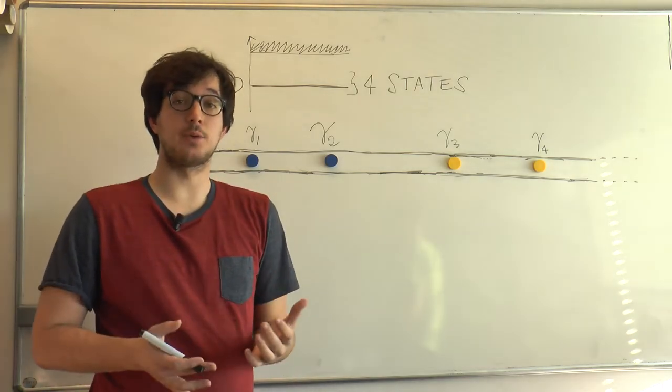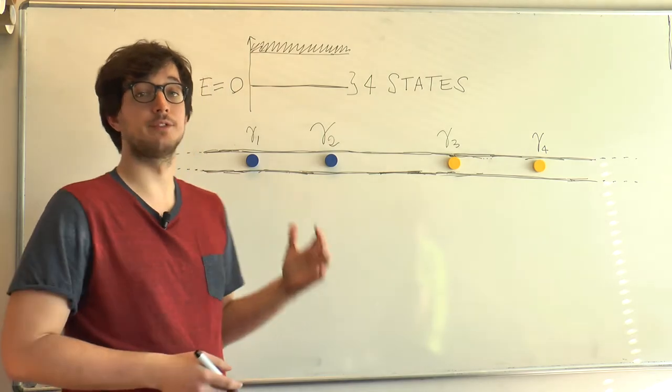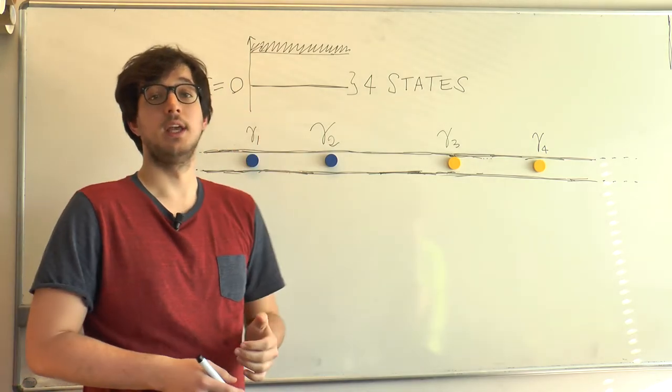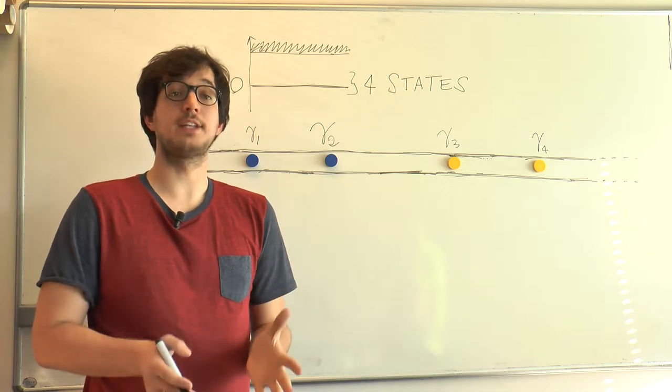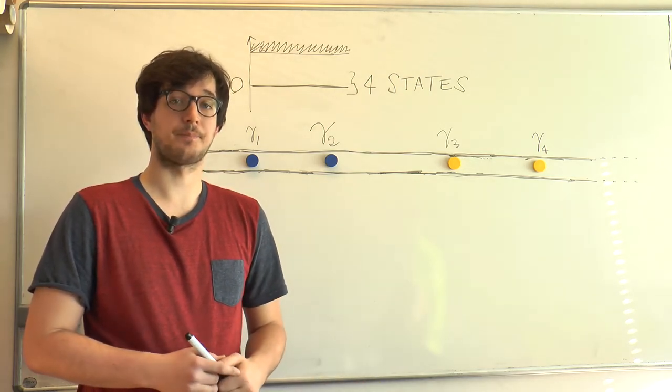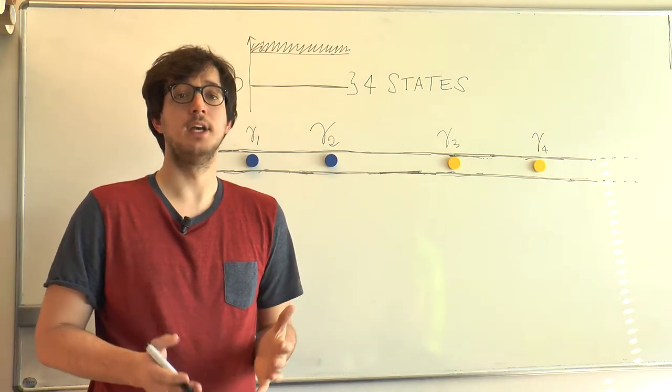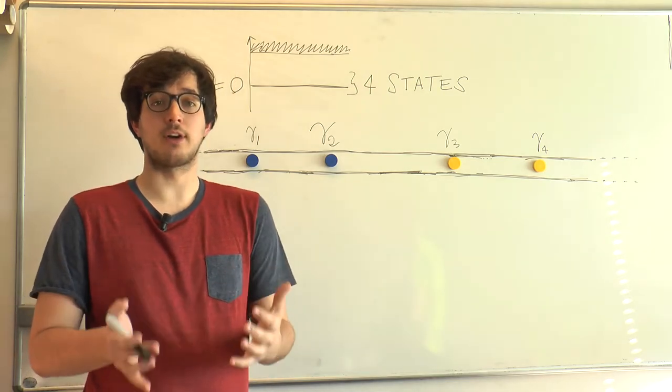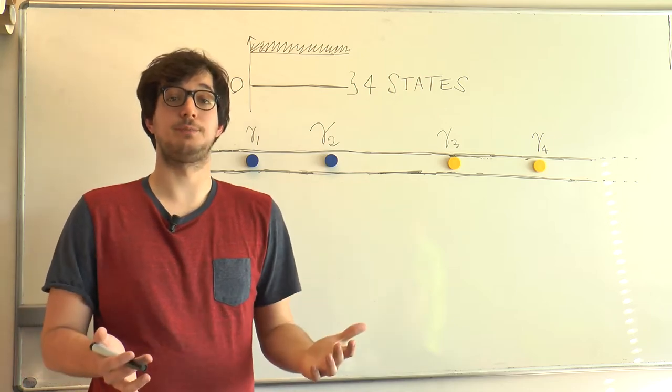Now, in general, the ground state wave function is a superposition of the four states at zero energy. And we can, of course, think of it in terms of a vector with four components, which are the coefficients of this linear superposition. Now, we want to study what happens to the wave function when two Majoranas, say the ones in the middle, exchange their position in space.